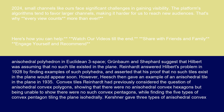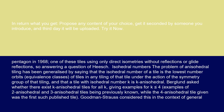Reinhardt had previously considered the question of anisohedral convex polygons, showing that there were no anisohedral convex hexagons, but being unable to show there were no such convex pentagons, while finding the five types of convex pentagon tiling the plane isohedrally. Kirchner gave three types of anisohedral convex pentagon in 1968, one of these tiles using only direct isometries without reflections or glide reflections, so answering a question of Heesch.